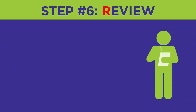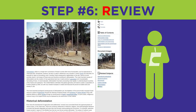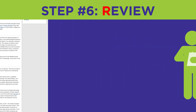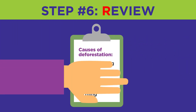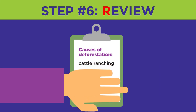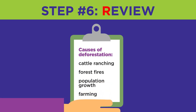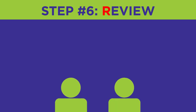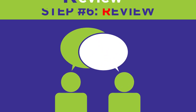Then consult your notes or even go back and re-read certain sections until you are confident that you know the information. For example, check your understanding by listing the causes of deforestation out loud: cattle ranching, forest fires, population growth, and farming. If you're still unsure or confused about what you read, you may need to ask your teacher or consult another source to get your questions answered.